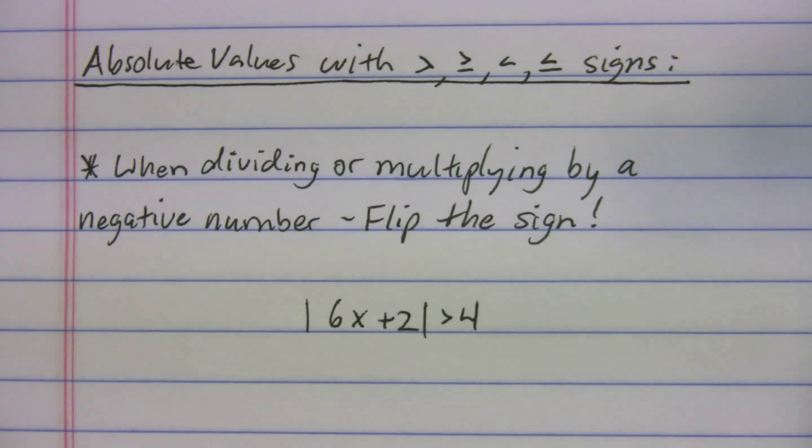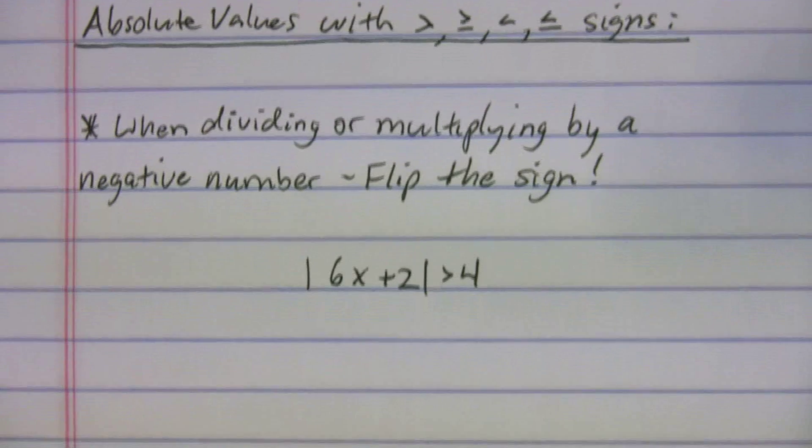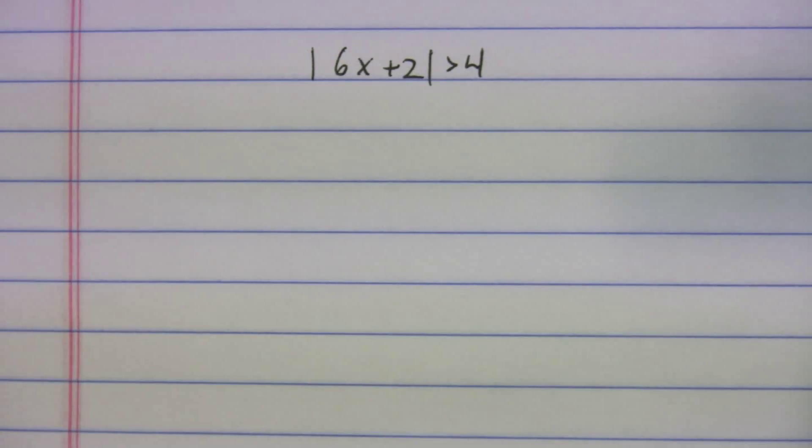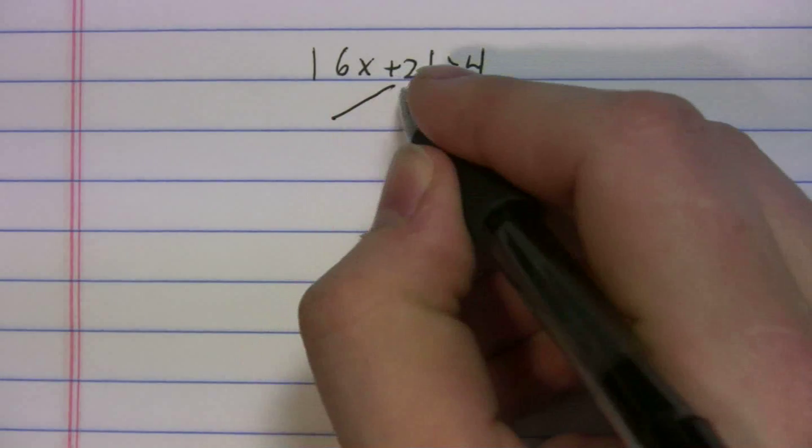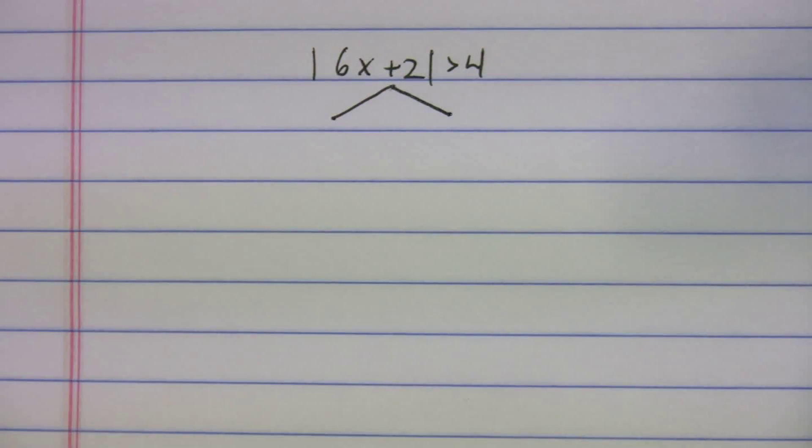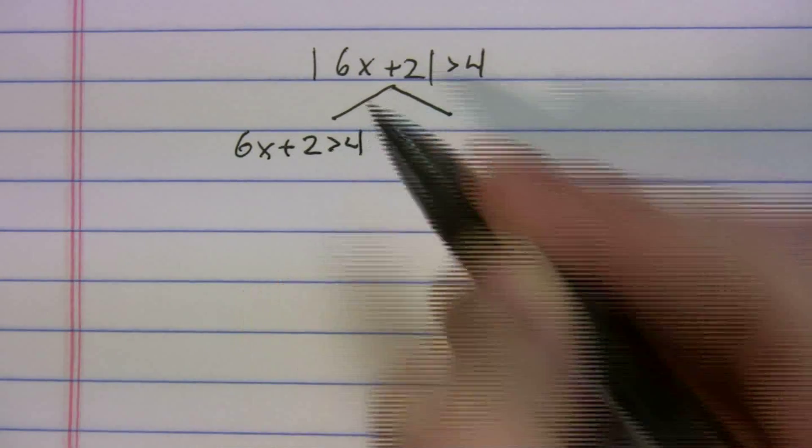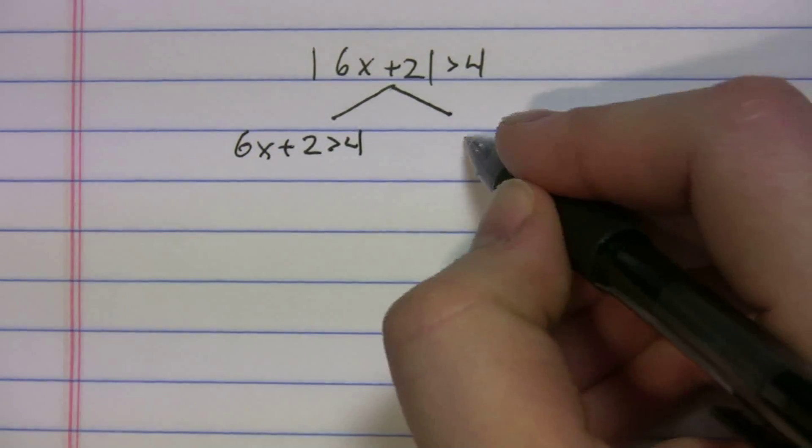So let me take you through one here to show you it's slightly different than when you have the equal sign. These are going to be slightly different problems. So you're going to set it up the same way though. Two sides. We'll do |6x + 2| > 4. We just rewrote it. But this time...